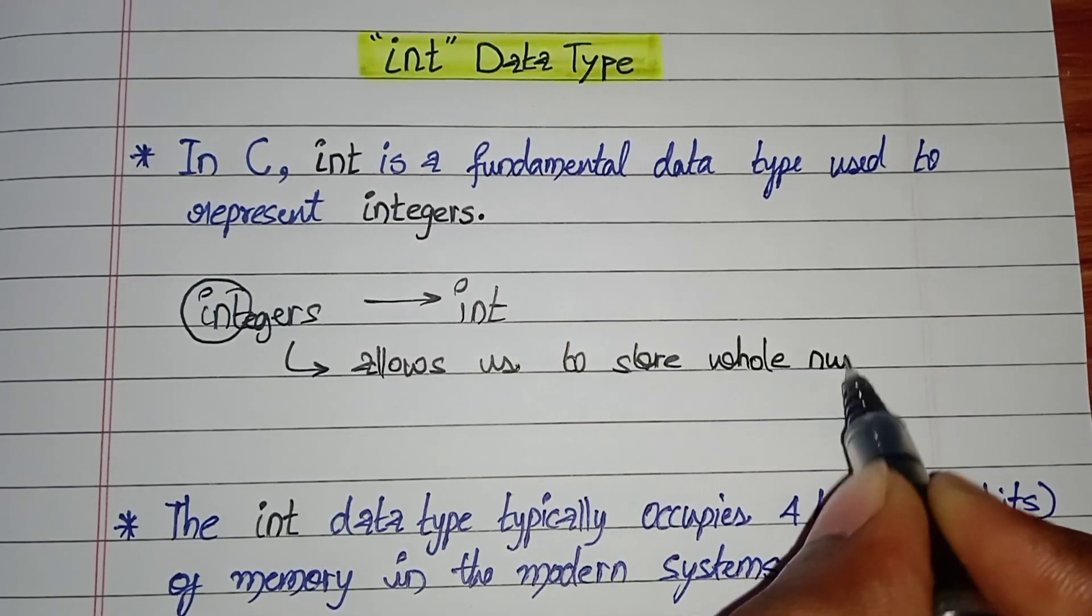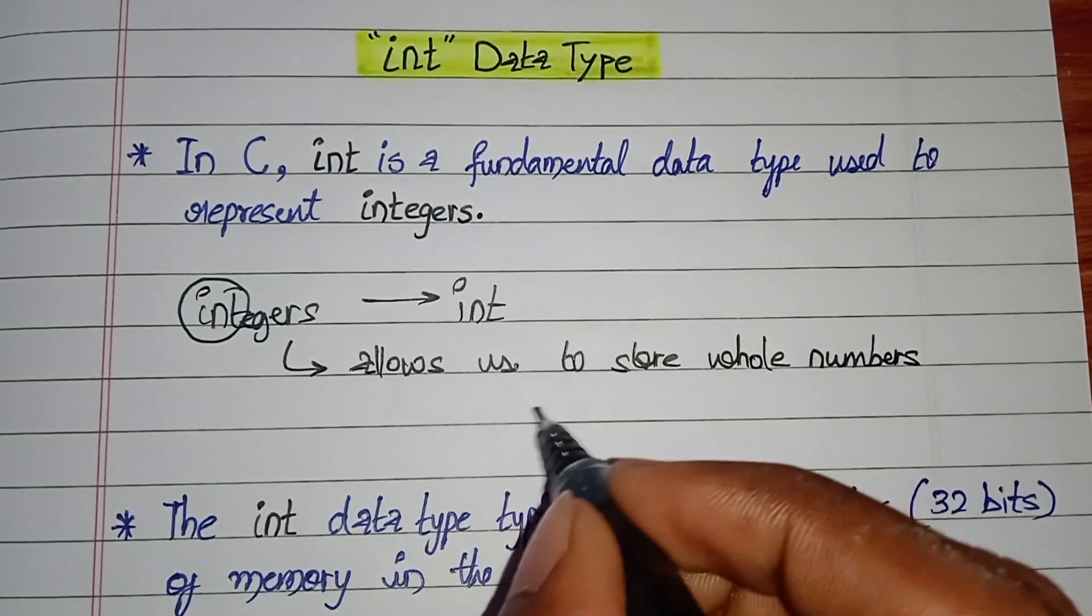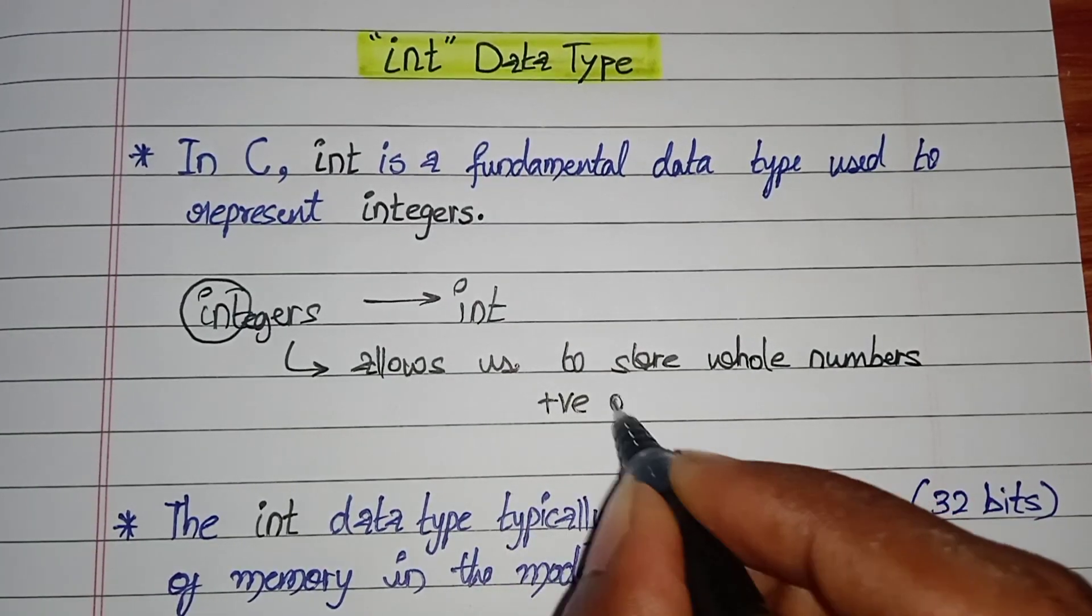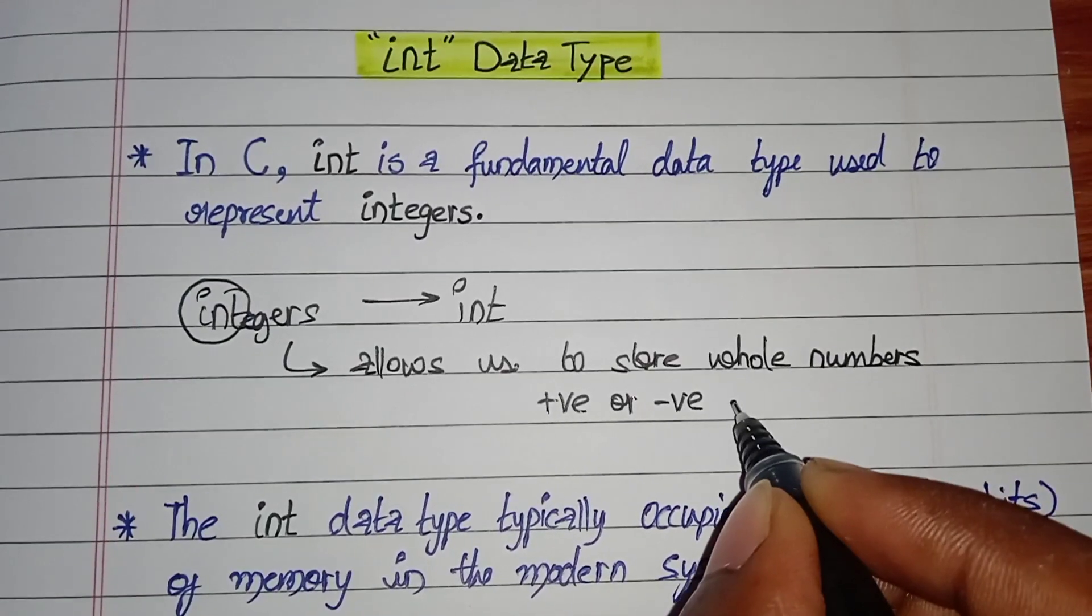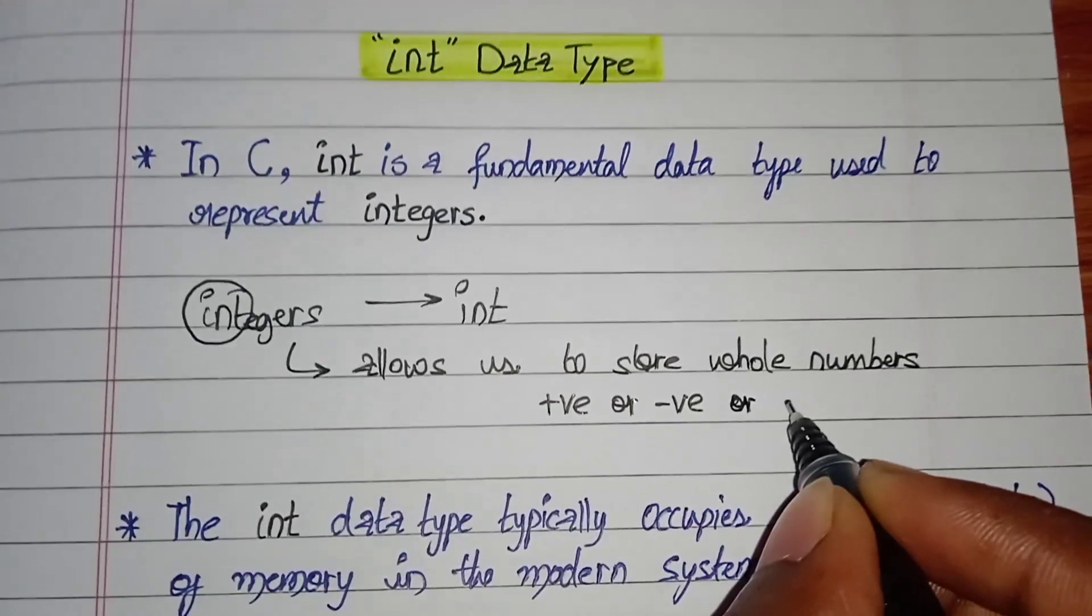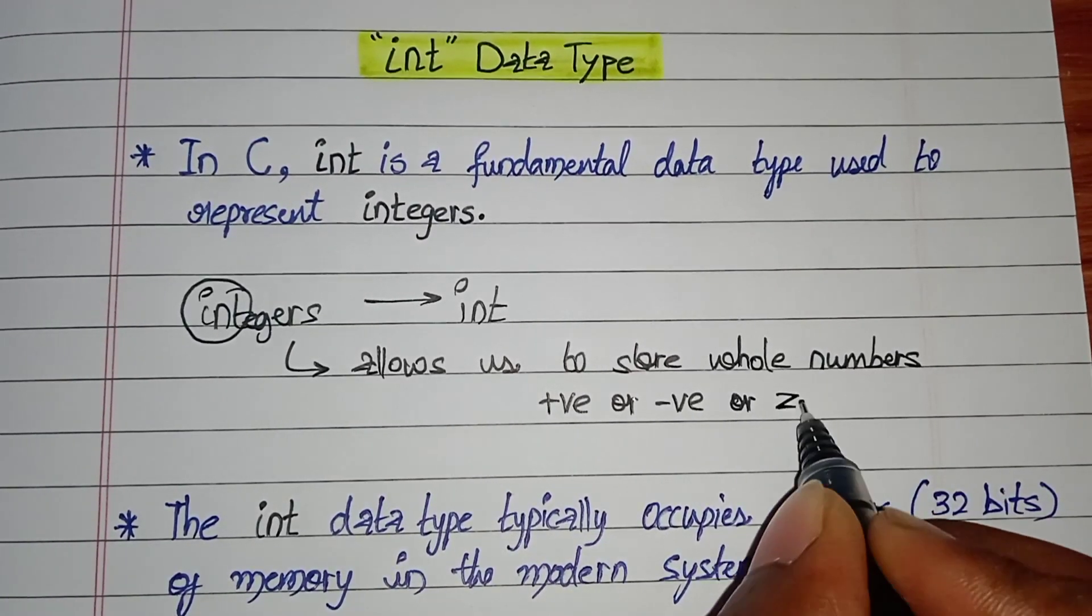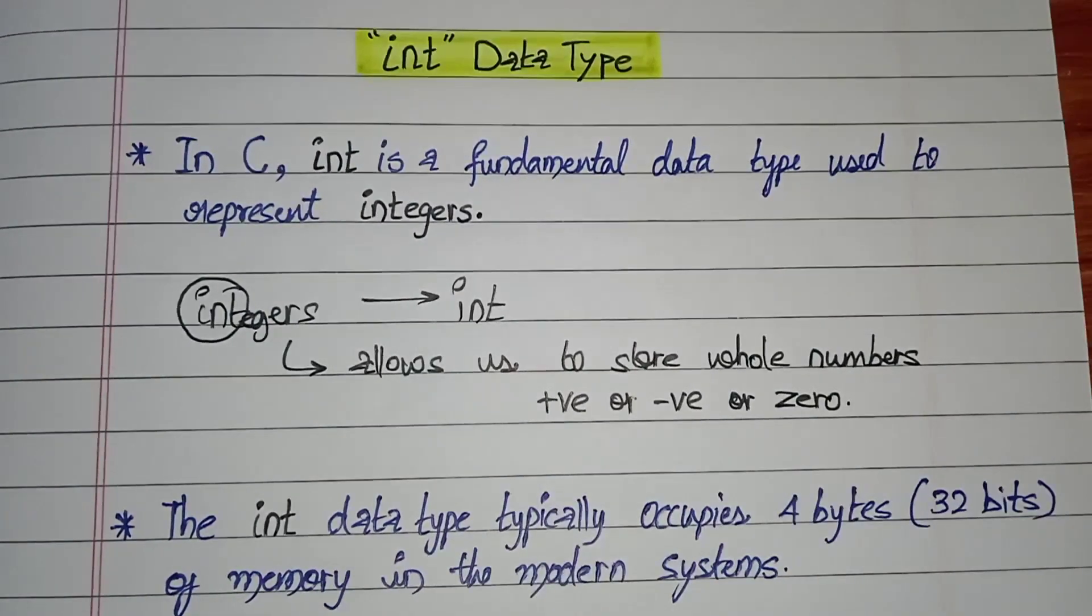So int data type allows us to store whole numbers. The whole numbers may be positive or negative or zero. We know whole numbers start from zero: zero, one, two, three to positive infinite, or zero, minus one, minus two, minus three to negative infinite.